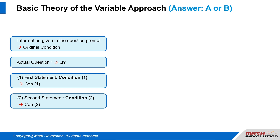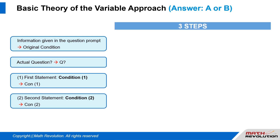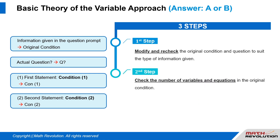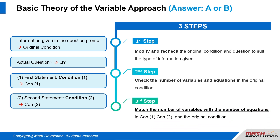After reviewing the different terms in a DS question, we will look at the three steps. First step: modify and recheck the original condition and the question to suit the type of information given. Second step: check the number of variables and equations in the original condition. Third step: try to match the number of variables with the number of equations in condition 1, condition 2, and the original condition. These three steps are the most important part of the variable approach, especially the first step. Once you have completed the first step, solving the problem becomes much easier.